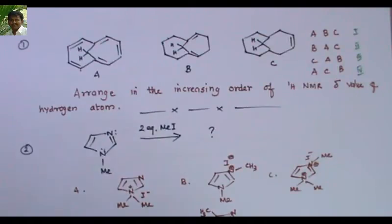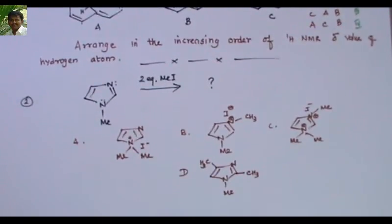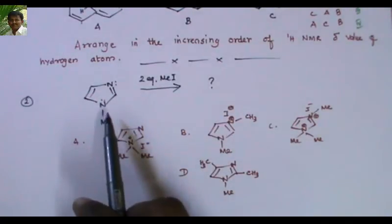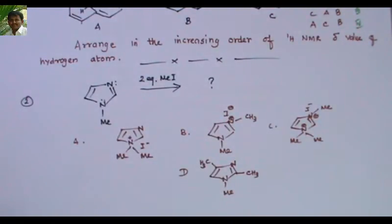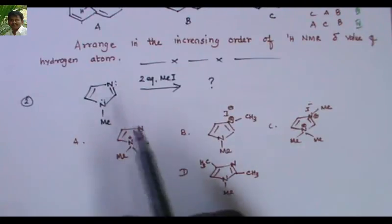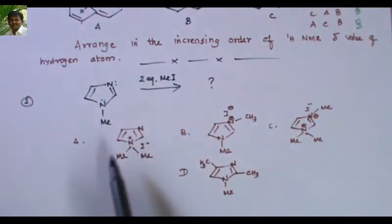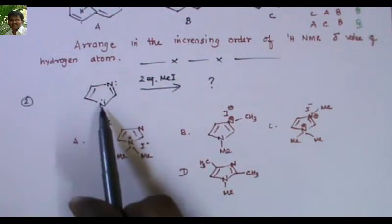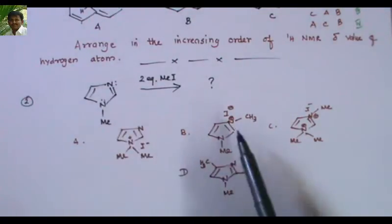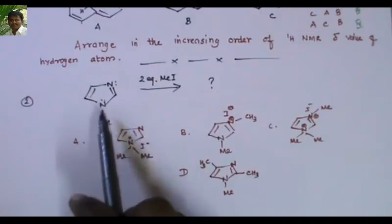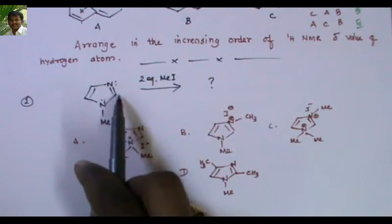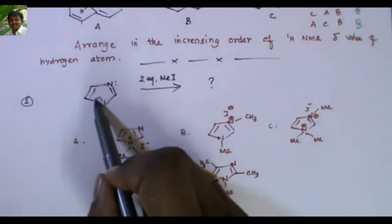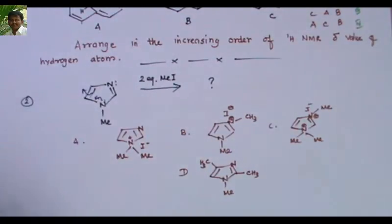Second problem: with N-methylimidazole, I add two equivalents of methyl iodide — what will be the product? Even with two equivalents, methylation takes place only on one nitrogen, or both nitrogens undergo methylation to give a product (third option), or methylation takes place on the carbon because of resonance — this proton is acidic so it undergoes methylation. Four options are given; which one is correct?